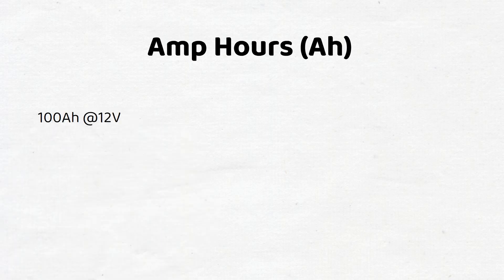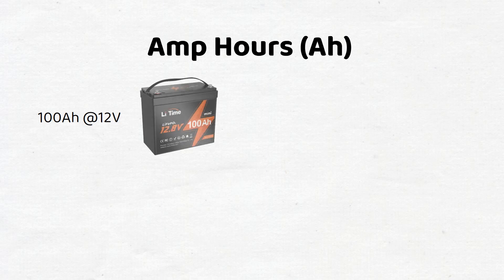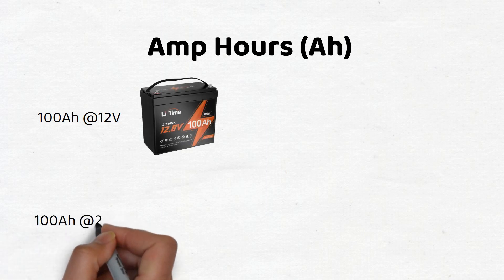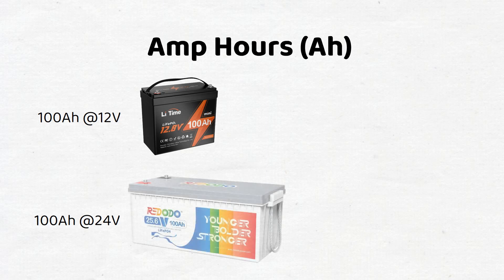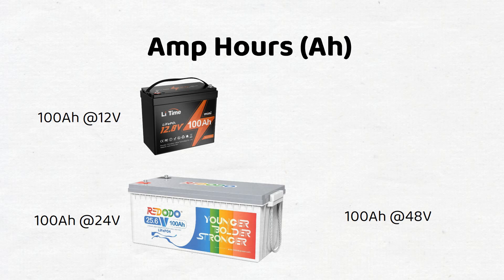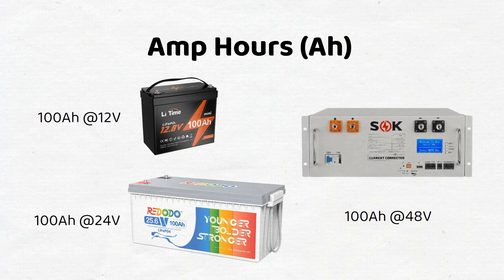You can have a 100 amp hour battery at 12 volts, a 100 amp hour battery at 24 volts, or a server rack at 100 amp hour at 48 volts. All of these batteries have a different energy capacity. So when someone asks how big your battery is, you shouldn't say it's 100 amp hours, because it depends on the voltage of the battery.